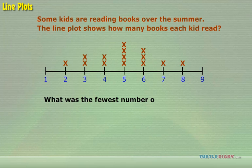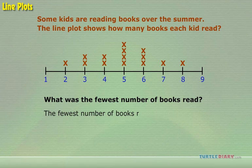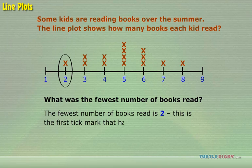The fewest number of books read is 2. This is the first tick mark that has a cross above it. Let's review the lesson.